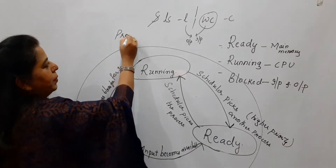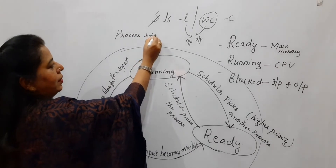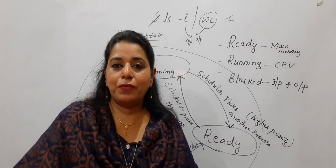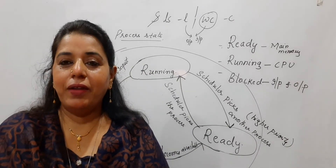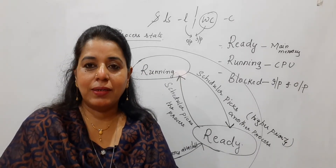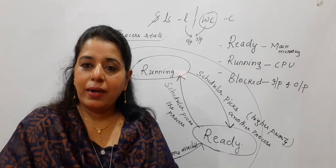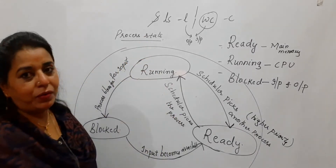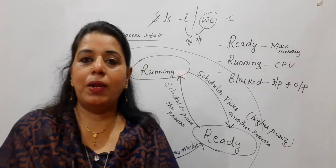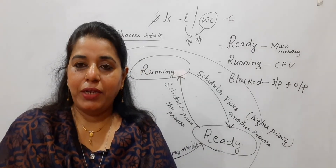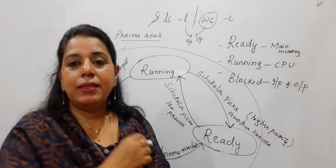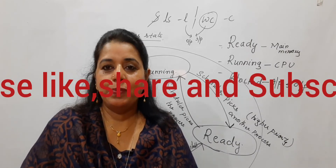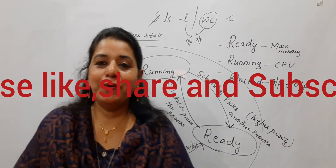The attribute name is process state. In that list you have process ID, program counter, list of open files and open devices, general purpose registers, and all those things. Please add process state to that list. In the previous session it was about the process model and definition; in this session I have explained the different states of a process with a diagram.